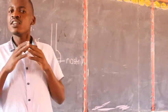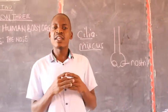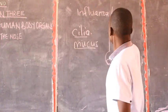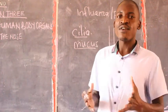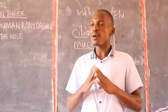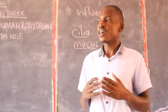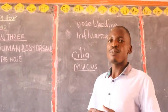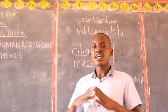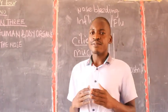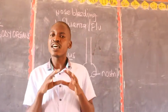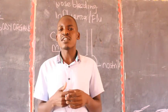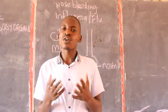Let us look at some of the diseases that affect the nose. The nose is affected by the disease called influenza, also called the flu. The flu affects the nose and also the lungs. Then we have the disorder that affects the nose, which is what we call nose bleeding. Nose bleeding comes as a result of when somebody breathes in dry air — the blood vessels begin to rupture. You can also end up having nose bleeding when someone gives you a blow on the nose.